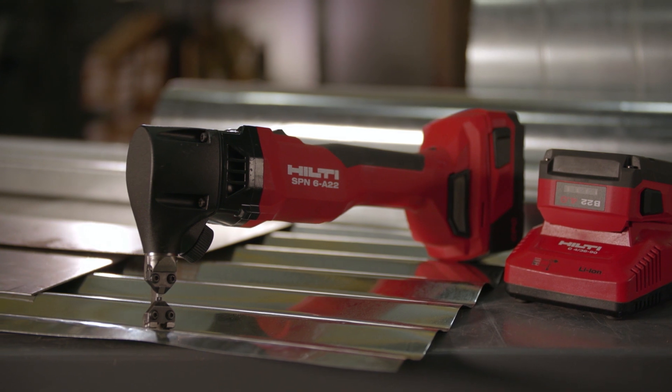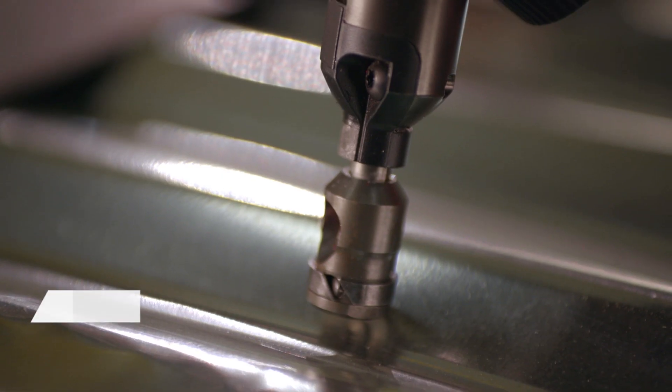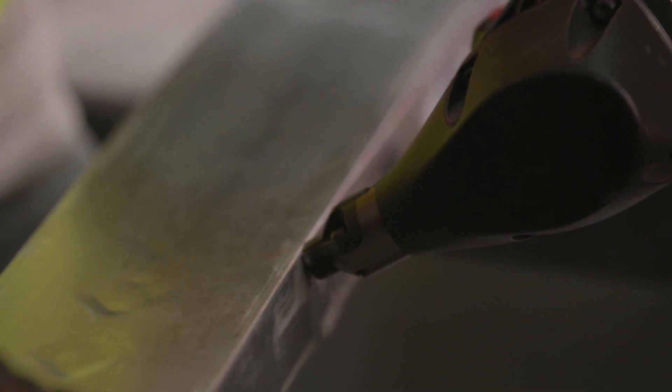Hilti's SPN 6A22 is available with three different cutting heads. The CN Round cutting head is best for cutting with precision and accuracy.